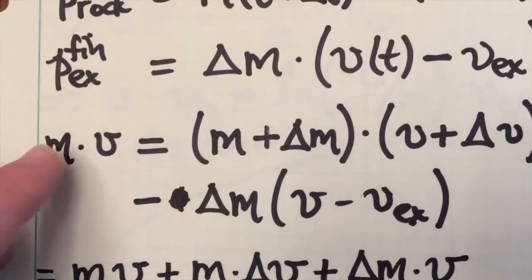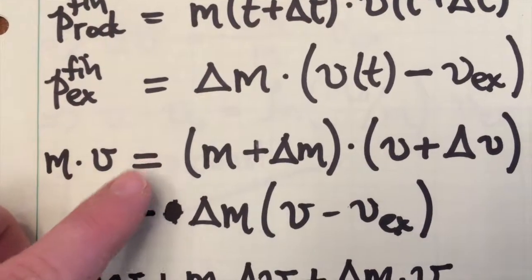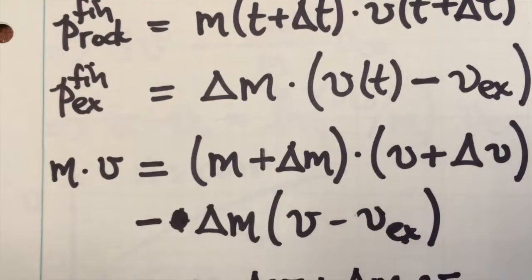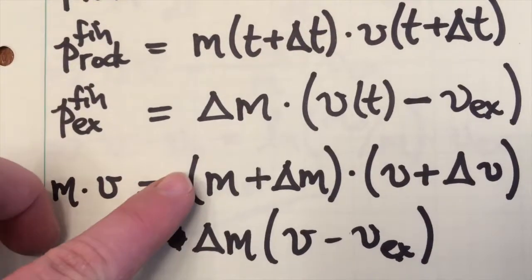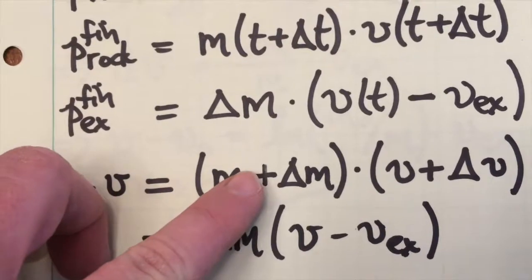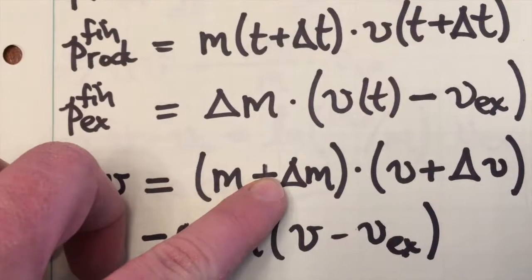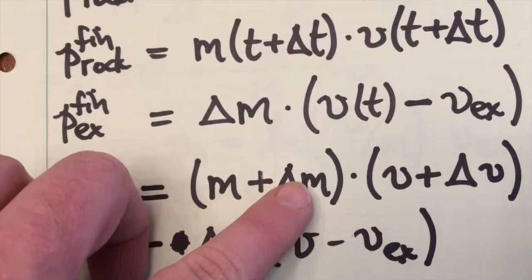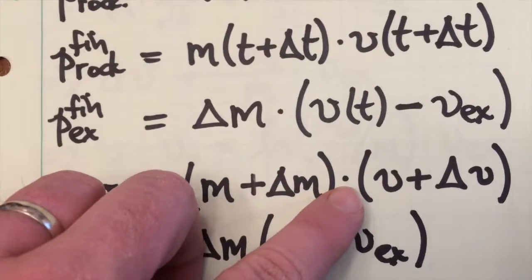Setting the initial momentum of the rocket, m times v, equal to the final momentum of the system, we get this expression. Now keep in mind, delta m is a small quantity. And so the change in the rocket's mass is the initial mass plus the change in the mass. As we'll see, delta m is going to turn out to be a negative number.